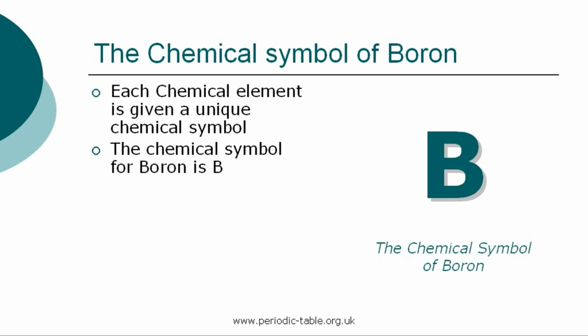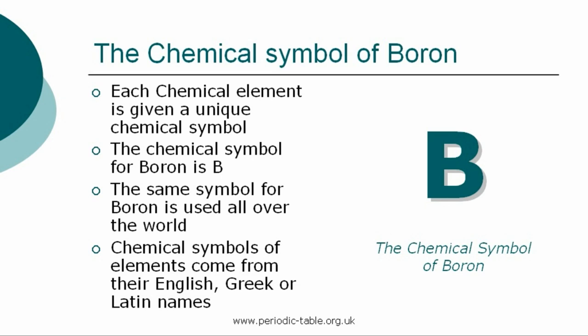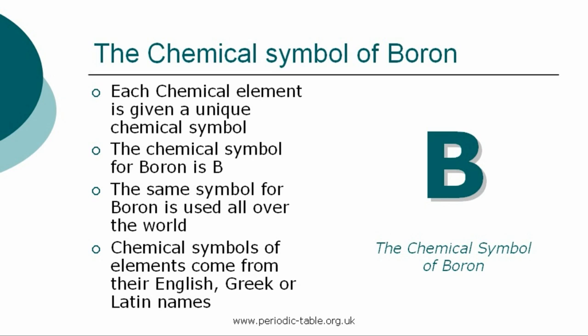Each chemical element is given a unique chemical symbol, which is used all over the world. The chemical symbol for boron is B. The chemical symbols of elements come from their English, Greek, or Latin names. The first letter of a symbol is always a capital letter, and if there are any subsequent letters, they are expressed in lower case.